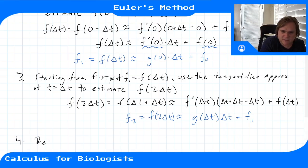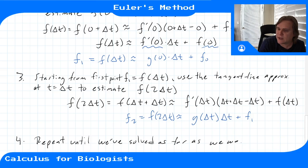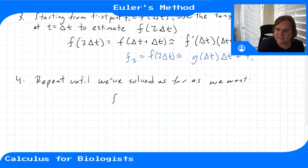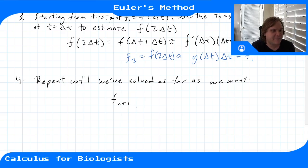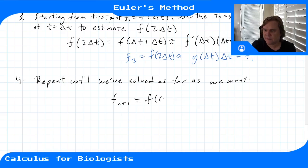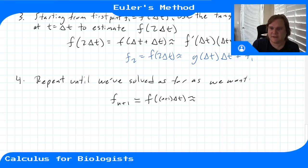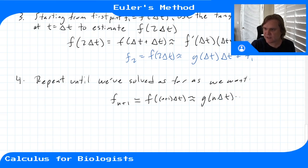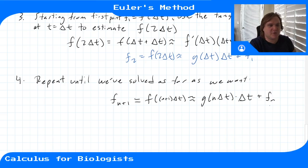We repeat until we've solved as far as we want. The general form: f at step n+1, or f at (n+1) delta t, is approximately g(n*delta t) times delta t plus f_n. This creates a discrete time system that generates an approximate solution to the differential equation.